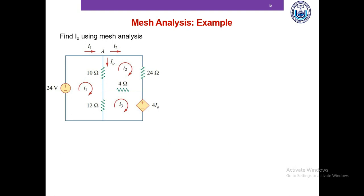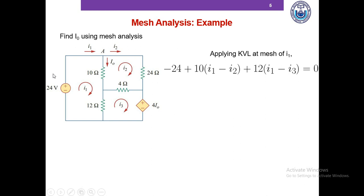Here's another example of mesh current analysis — determine the current I0 using mesh current analysis. Please pause this video and then we'll match your answers. In this example the meshes have been identified and the mesh currents are already given, so you don't have to do the first step.